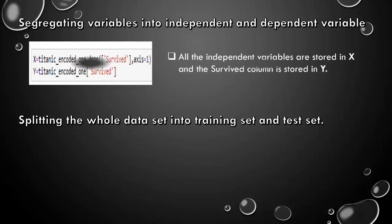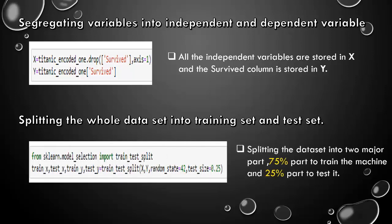Now, segregating variables into independent and dependent variables. As you can see, all the independent variables are stored in X and the survived column that is the target variable is stored in Y. And then, splitting the whole dataset into training set and test set. What we did? We split the dataset into two major parts, giving 75% to train the machine and 25% to test it. We can also do 80-20, 90-10, even we can also break the dataset into training set, validation set and test set.